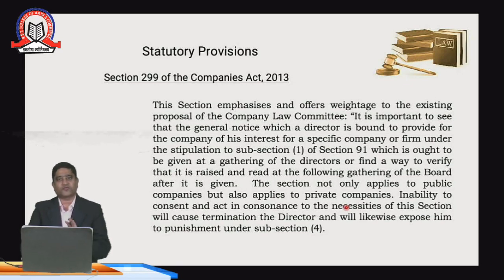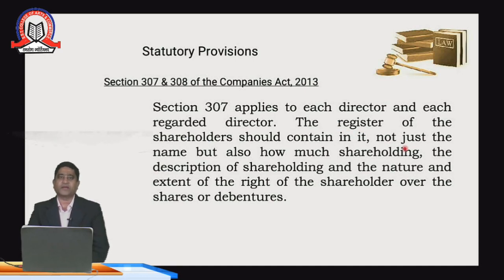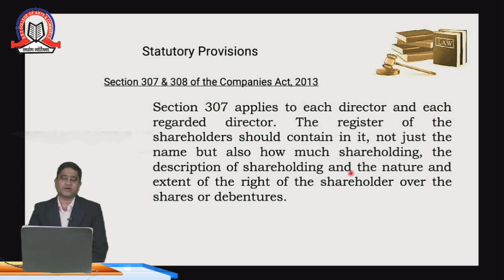If a director fails to inform, he would be liable under Section 209 of the Companies Act, read with Sections 307 and 308. A register of directors must be maintained and directors must attend meetings. If a director is consistently absent without valid reason, he is liable for an offence. If he is also absent during the AGM or extraordinary general meetings for three consecutive times, he loses his directorship and commits an offence under Sections 307 and 308 of the Companies Act.